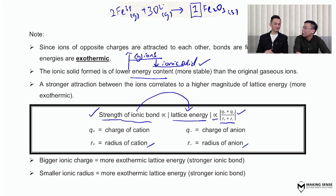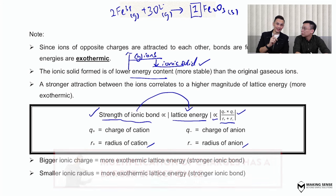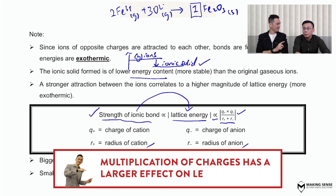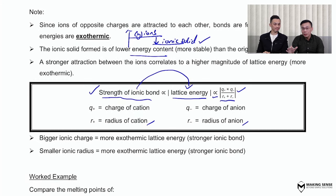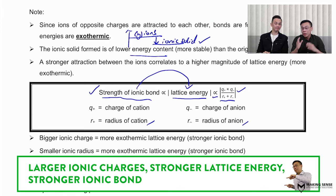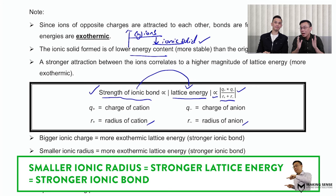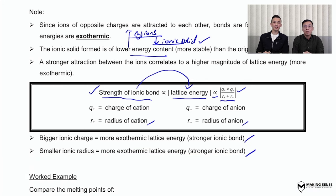Which factor is more important — charge or radius? Charges are multiplied together while radii are added together, so multiplication has a larger effect. Therefore, a change in charges is more significant than a change in radius. In other words, charge is the more important factor. To summarise: the larger the ionic charge, the larger the magnitude of the lattice energy, and the stronger the ionic bond. The smaller the ionic radius, the larger the magnitude of the lattice energy, and the stronger the ionic bond.